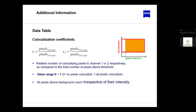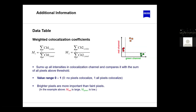The co-localization coefficient is defined as the number of pixels in channel one that co-localize divided by the total number of pixels in channel one. Pictorially, this is all pixels in the orange co-localized area divided by all pixels in the red area. If the majority of red pixels are in the co-localized area, the coefficient is high. The value ranges between zero (no pixels co-localize) and one (all pixels co-localize).